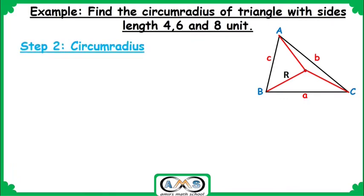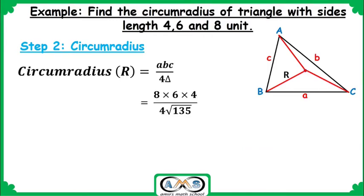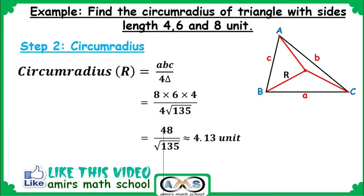Step 2: Apply the circumradius formula. R = (A · B · C) / (4 · Area) = (8 · 6 · 4) / (4 · √135). The 4s cancel, giving R = 48 / √135, which is approximately 4.13 units. In this way we can find the circumradius of any triangle when the lengths of the three sides are given.